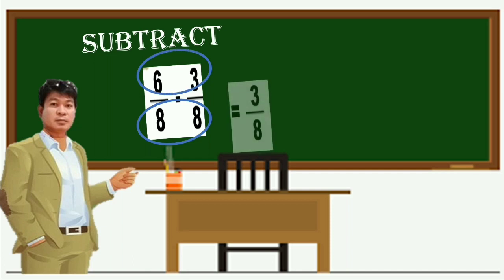So the first thing to do is subtract the numerator which is 6 minus 3 equals 3. And then copy the denominator which is 8.